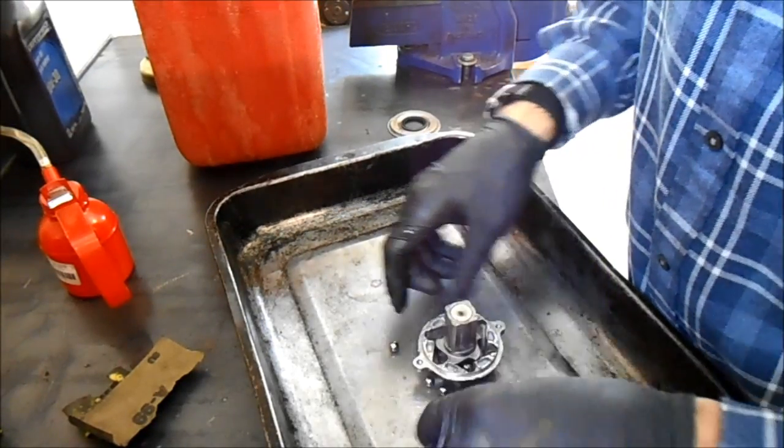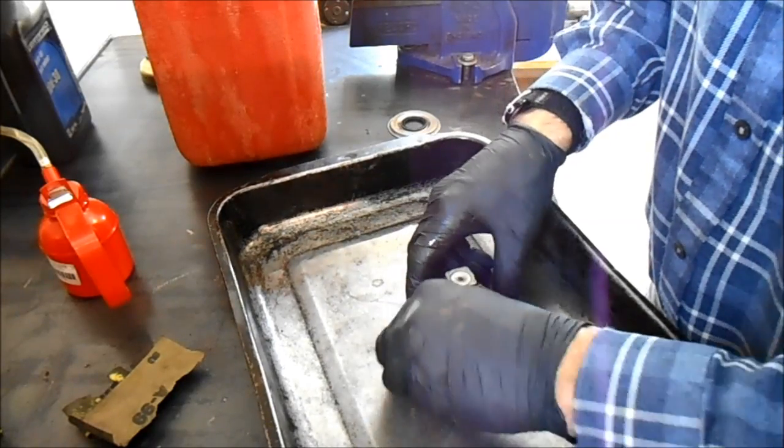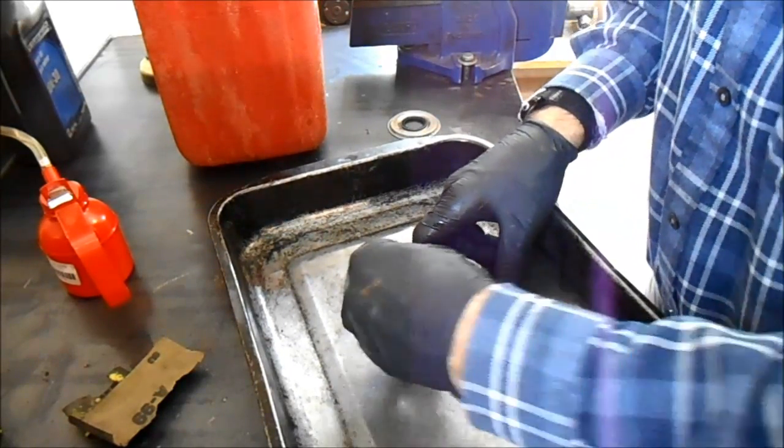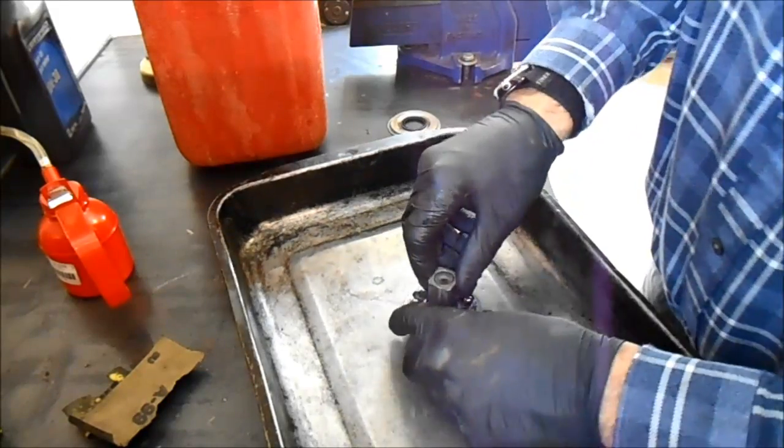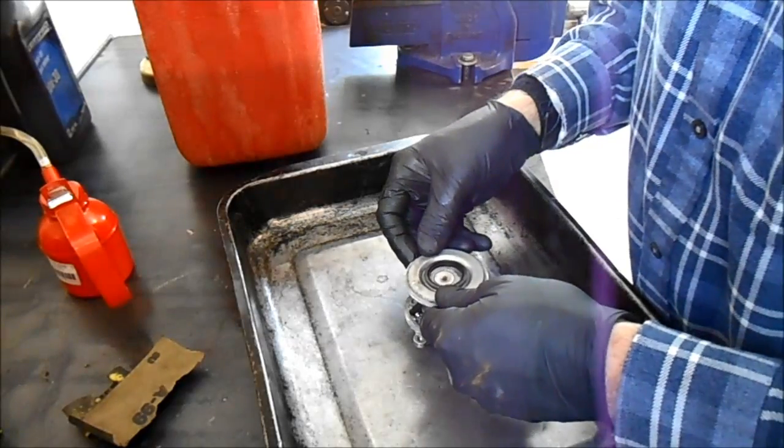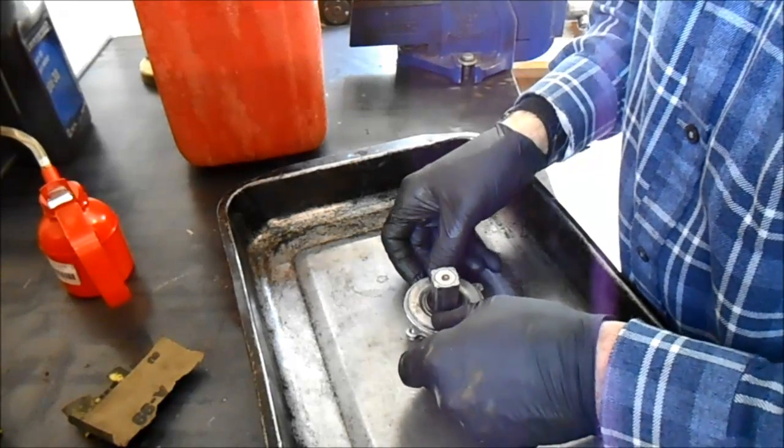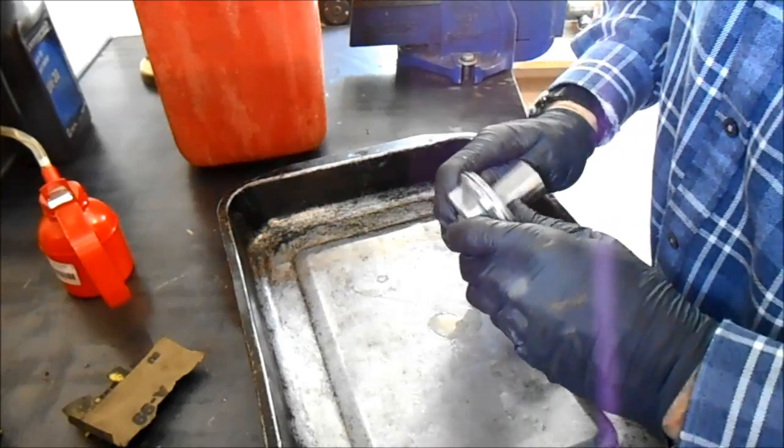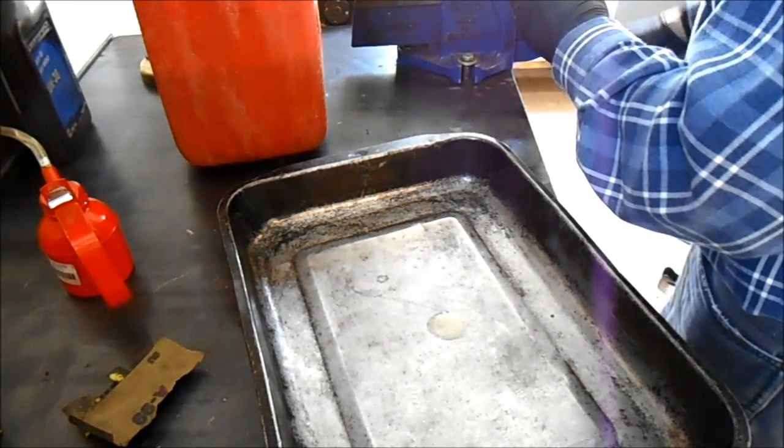And now we put the ball bearings back into this. Like so. Which gives it the ratcheting action. And then the lid goes back on. And I just use the vise to clamp it back together again.